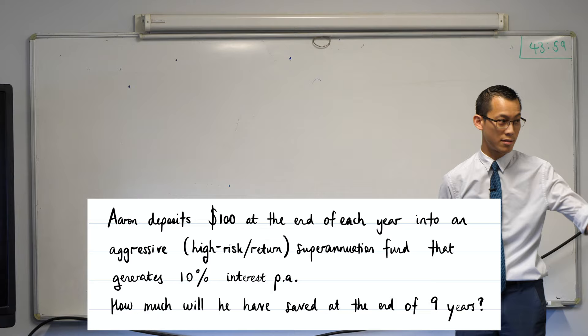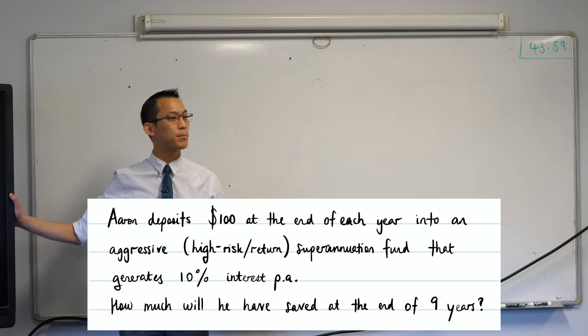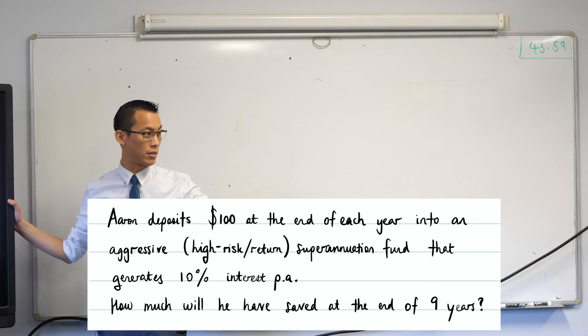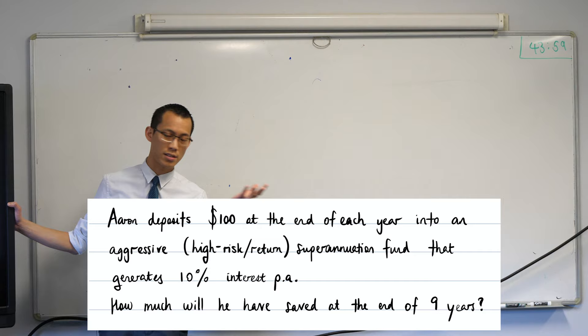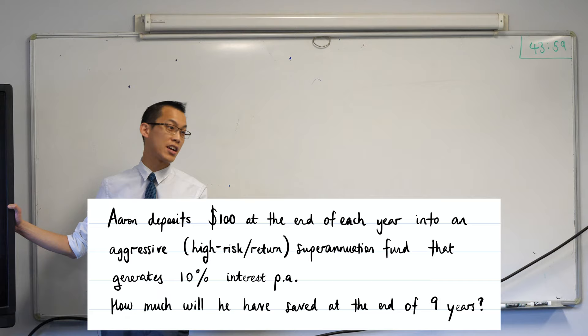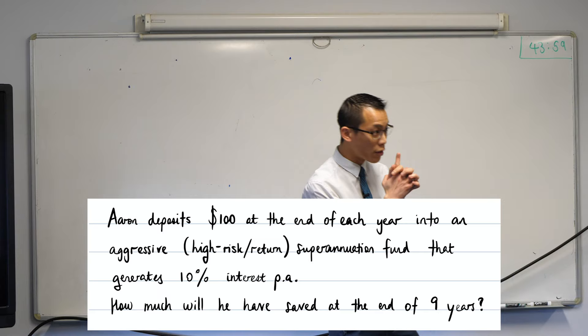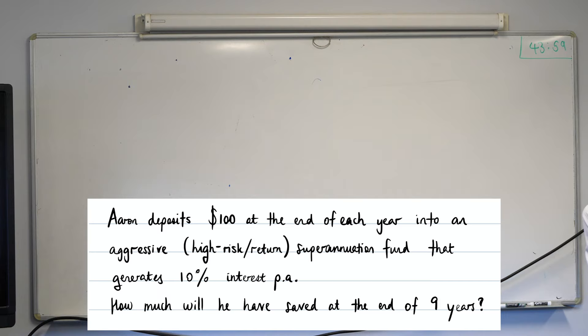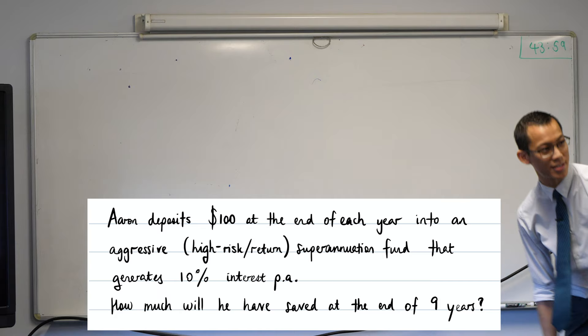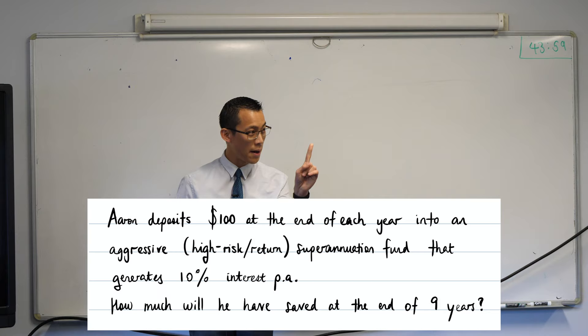This 10% interest per annum applies to whatever quantity of money is in the superannuation fund. Let's think about day one — first of January. It's not a rhetorical question: on the first of January, how much money is in the bank account? Read the question carefully. On the first of January there is no money in the account, because he deposits at the end of each year. On the second, third, thirtieth of December — nothing is there.